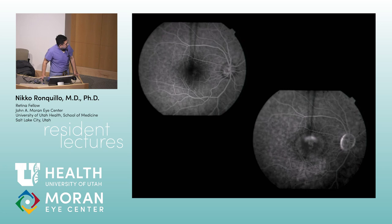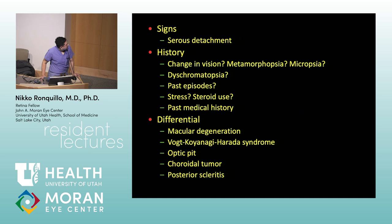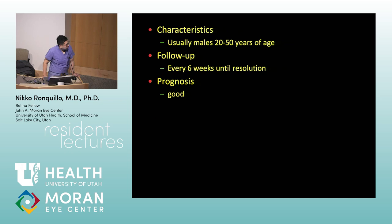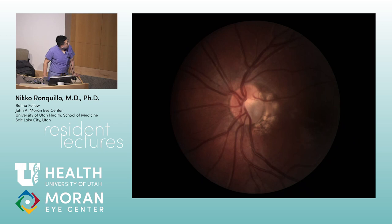Next — CSCR (central serous chorioretinopathy). Classic FA pattern is the smokestack pattern of leakage; the other is the expansile dot pattern. Associations: stress, steroid use, type A personality, and sometimes antipsychotic medications. Treatment: observation; PDT or laser for persistent cases.